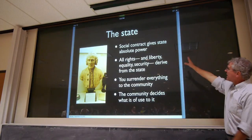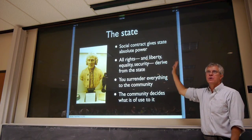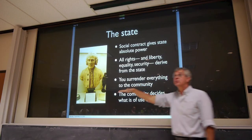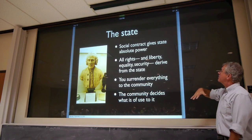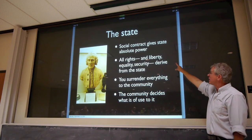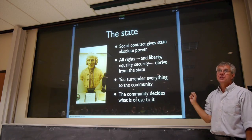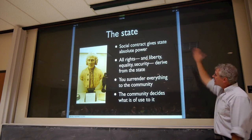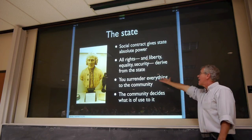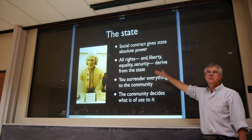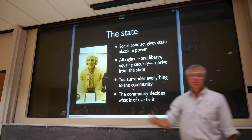On that conception, the state has absolute power — it is in control of all the rights. It may grant individuals rights, but it's up to the state to grant or not to grant them. All rights and all liberties, all equality, all security ultimately derive from the state. That's why I describe it as a top-down picture. You surrender everything to the community, and the community decides what's of use to it and allows you to keep the rest.